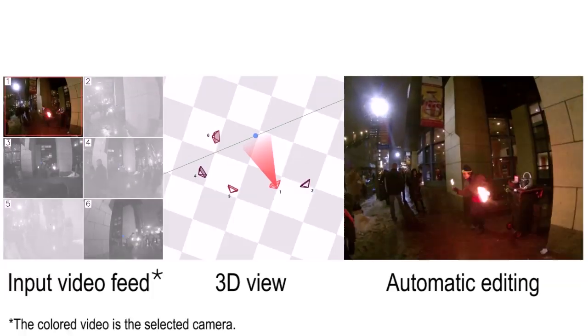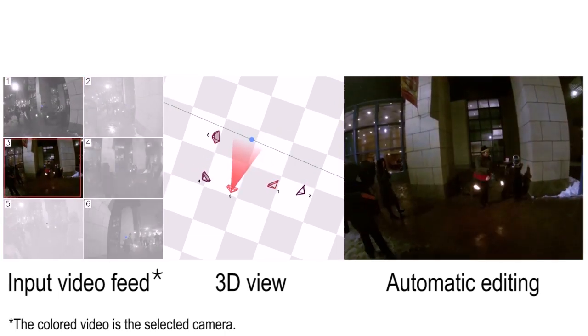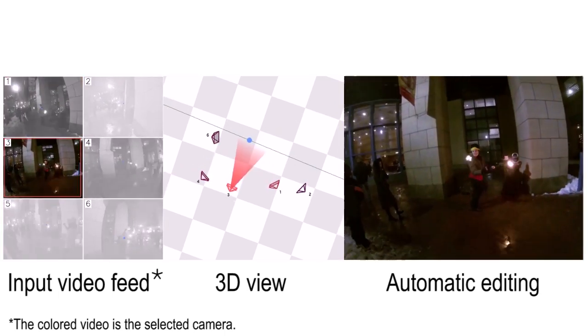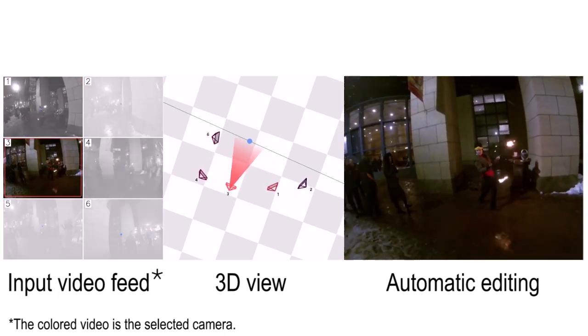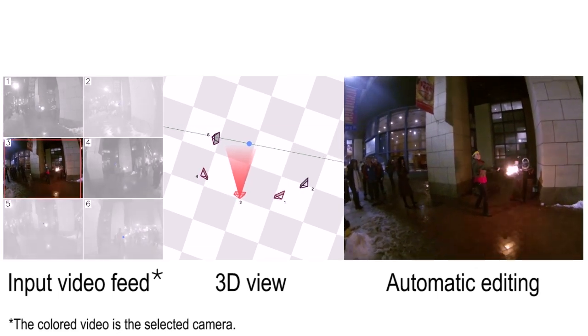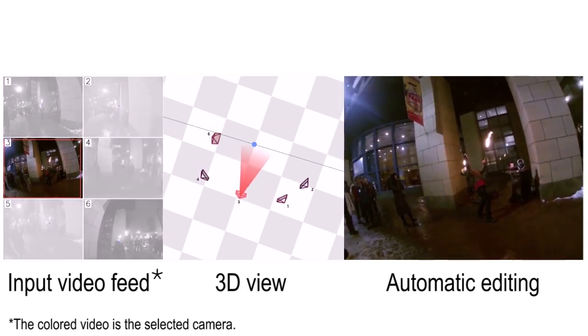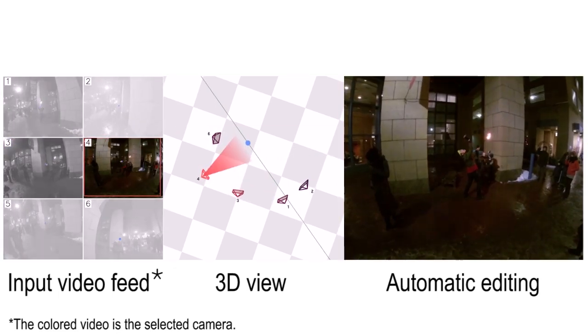A busker performs a fire-eating act. Our algorithm cuts between views to keep the video interesting, while avoiding jump cuts and violating the 180-degree rule.